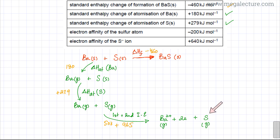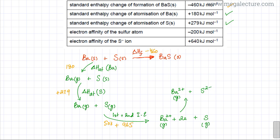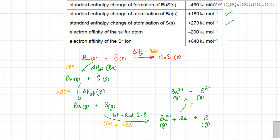Now that barium has lost two electrons and is a 2+ ion, sulfur needs to gain those two electrons to form S²⁻. The gaseous Ba²⁺ ion remains as is, and sulfur gains two electrons to form the S²⁻ gaseous ion. This step represents the first plus second electron affinity of sulfur. The first electron affinity is −200 kJ/mol — always exothermic — and the second electron affinity is +640 kJ/mol.